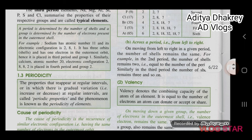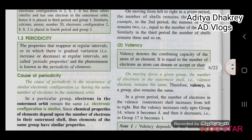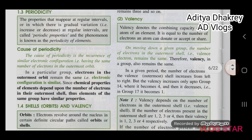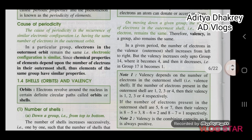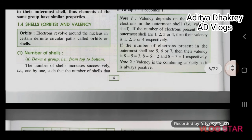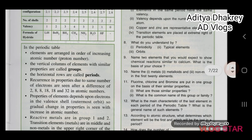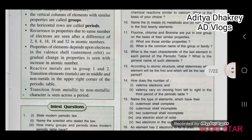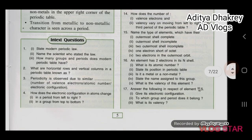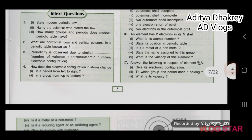Valency denotes the combining capacity of the atom of an element. It is equal to the number of electrons an atom can donate, accept, or share. This is the first part of the chapter. If you want more content, please let me know in the comments section.